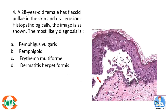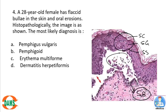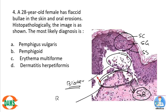A 28-year-old female has flaccid bullae in the skin and oral erosions. The histopathology shows stratum corneum, stratum granulosum, stratum spinosum, and stratum basale. There is a blister cavity filled with acantholytic cells. The basal layer is a single layer separated from the other layers — this is called the 'row of tombstones' appearance. This is classical for pemphigus vulgaris, which presents with flaccid bullae and oral ulcers (mucocutaneous involvement).